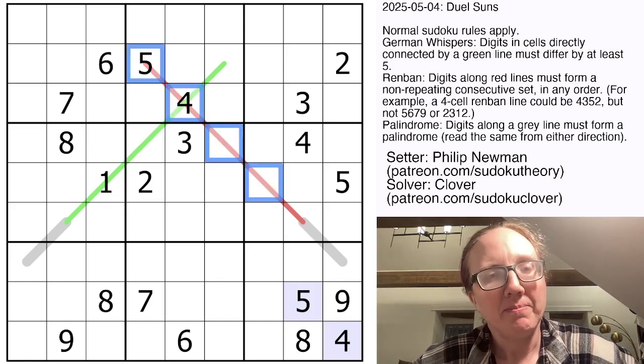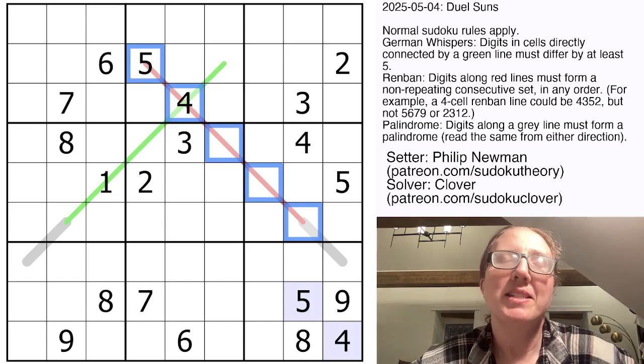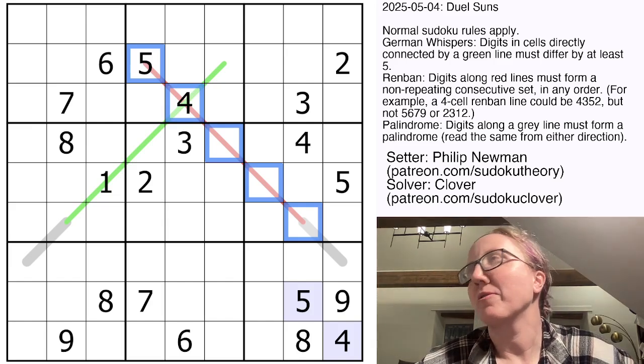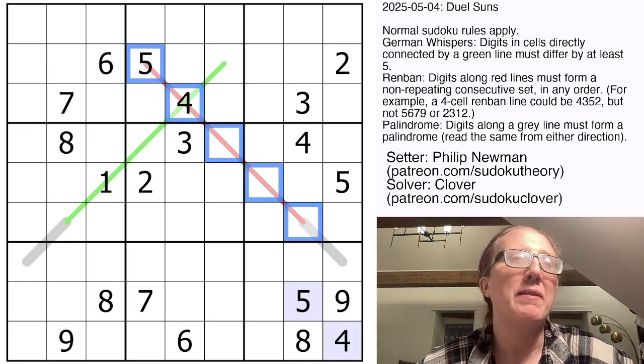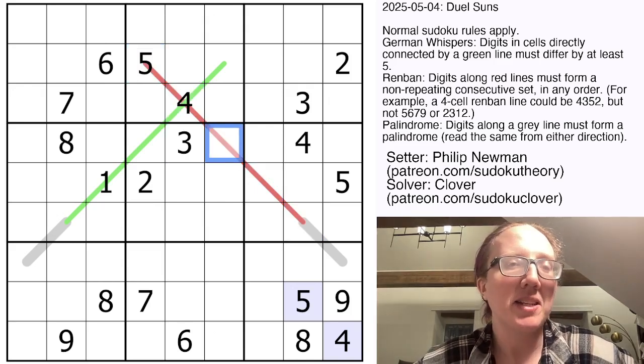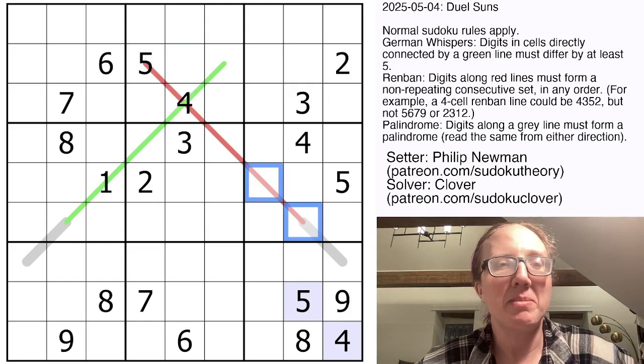The red line is a Renbon line. That line has to contain a set of consecutive numbers that can appear in any order. So for instance, they could contain one, three, five, four, two, instead of one, two, three, four, five. As long as all of the consecutive numbers are there in the list, they can be scrambled up.